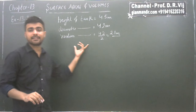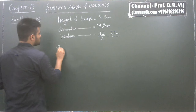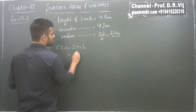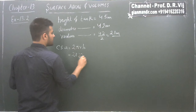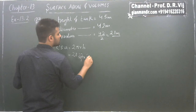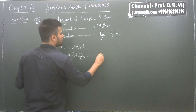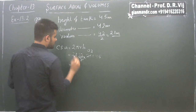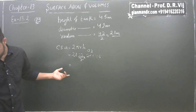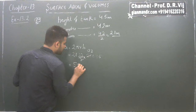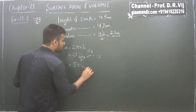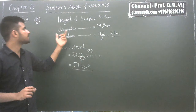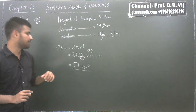The first part asks us to find the lateral surface area. Curved surface area = 2πrh = 2 × (22/7) × 2.1 × 4.5. Solving this — 2.1 gets cancelled giving 0.3 — and we get 59.4 meter square. That is the curved surface area of the closed cylindrical petrol tank.